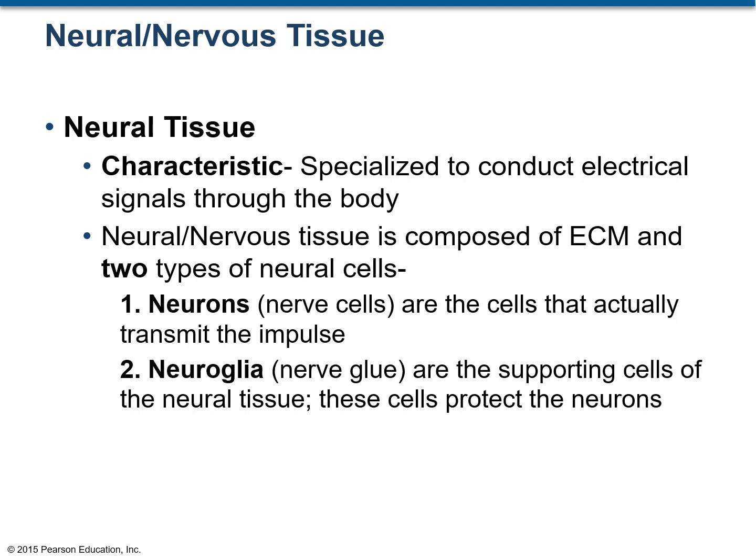We are done with muscular tissue, so we move on to neural or nervous tissue. This tissue makes up your nervous system — that means your brain, your spinal cord, and your nerves. The most important feature of this tissue is its ability to conduct or transmit electrical signals, that means nerve impulses, throughout the body. Nervous tissue is made up of cells as well as extracellular matrix. There are two types of cells: the neuron and the neuroglia.